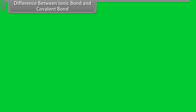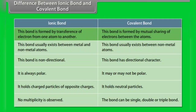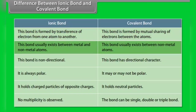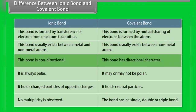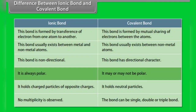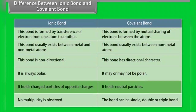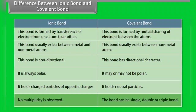Ionic bond is formed by transference of electrons from one atom to another, whereas covalent bond is formed by mutual sharing of electrons between atoms. Ionic bond usually exists between metal and non-metal atoms, whereas covalent bond usually exists between non-metal atoms. Ionic bond is non-directional, whereas covalent bond has directional character. Ionic bond is always polar, whereas covalent bond may or may not be polar. Ionic bond holds charged particles of opposite charges, whereas covalent bond holds neutral particles. No multiplicity is observed in ionic bond, whereas covalent bond can be single, double, or triple.